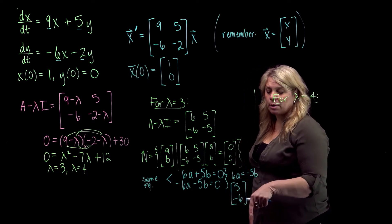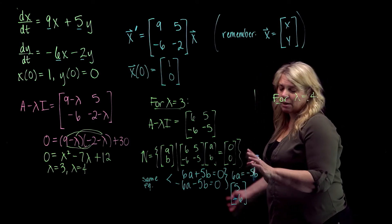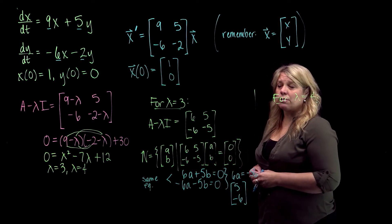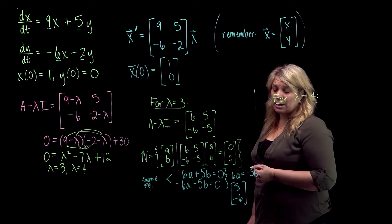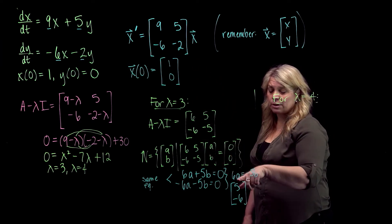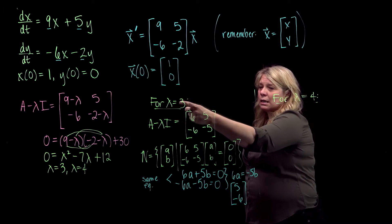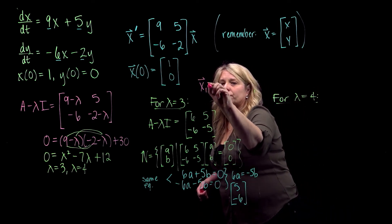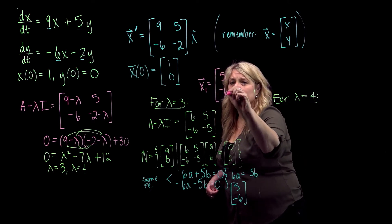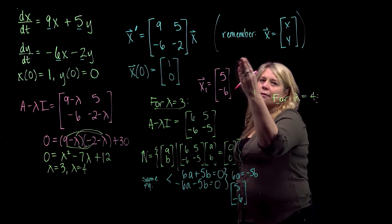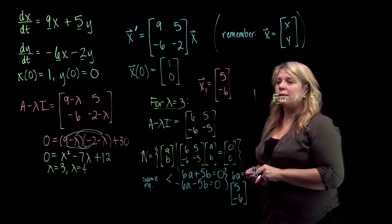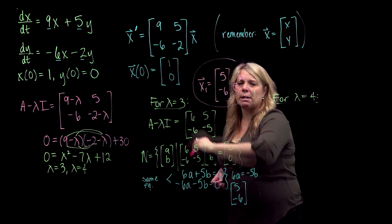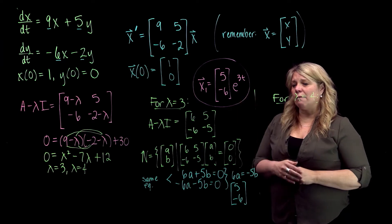It's common for students to put the wrong numbers or wrong signs here, so think through it carefully. The vector [5, negative 6] is a basis for this null space. From the theory we covered in class, one solution to the differential equation is this eigenvector times e to the lambda t. So x1 equals the vector [5, negative 6] times e to the 3t. I'll circle that — it's not my final answer, but I'll need it to build the answer. That's one linearly independent solution.